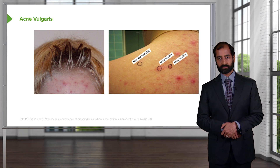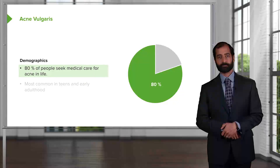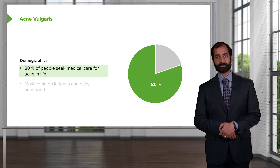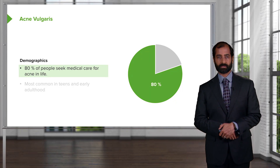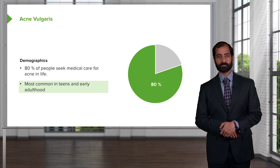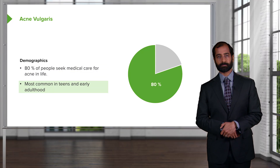Acne vulgaris can present in different types — you could have pustules, you could have vesicles, so in terms of description it could be all over the place. When we talk about pathogenesis, we'll be focusing upon the puberty years. Demographics: 80% of people seek medical care for acne in life. It's most commonly found in teens and early adulthood, so you're thinking about those pubertal ages.